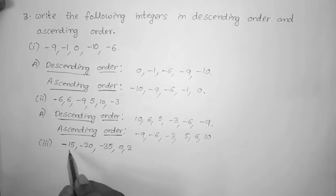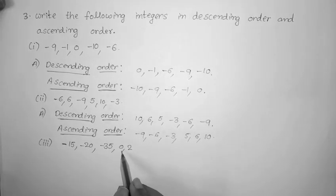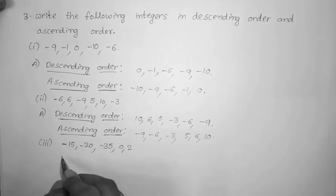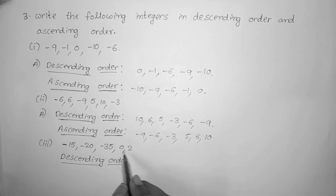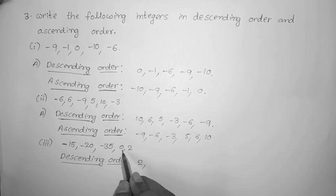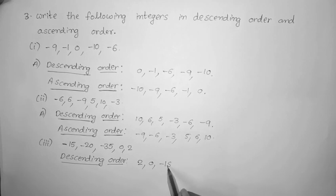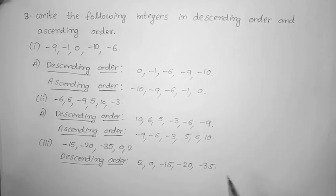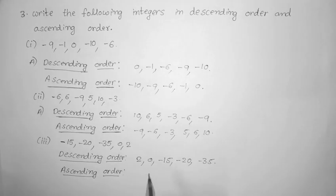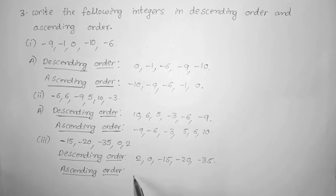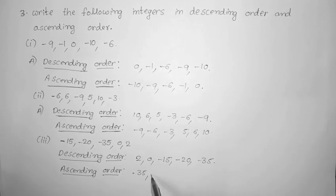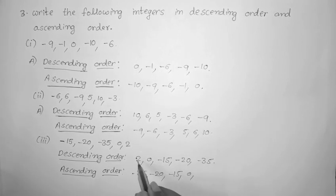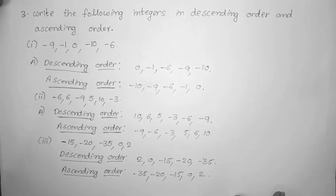3rd Roman 3rd one: minus 15, minus 20, minus 35, 0, 2. Descending order: among these numbers the biggest is plus 2, then 0, then minus 15, minus 20, minus 35. Ascending order is the reverse: minus 35, minus 20, minus 15, 0, 2. These are the solutions for the 3rd Roman.